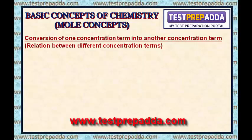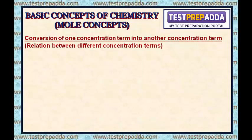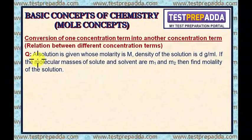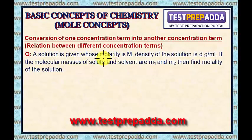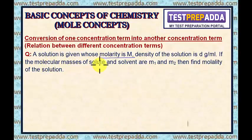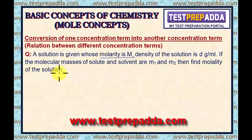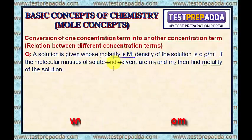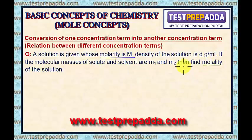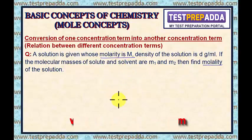But for that you need to know the basic definitions of the concentration terms. To understand this conversion method, I will take a question. The question says: a solution is given whose molarity is M. Density of the solution is d gram per ml. If the molecular masses of solute and solvent are M1 and M2, then find the molality of the solution. Molality is asked and molarity is given — one concentration is given, another is asked — so this is a convergent type question.